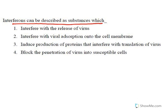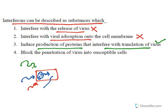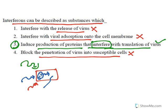Next question: 'Interferons can be described as a substance which...' Interferons are proteins that stimulate cells to produce immune mediators that inhibit viral replication — they do not directly attack the virus. The correct option is: 'Induce production of proteins that interfere with translation of virus.' They activate the cell so that proteins are synthesized to act on the virus. They are called interferons because they interfere with viral translation.